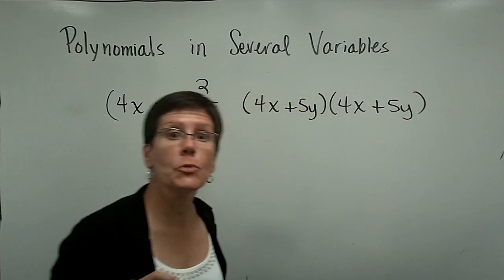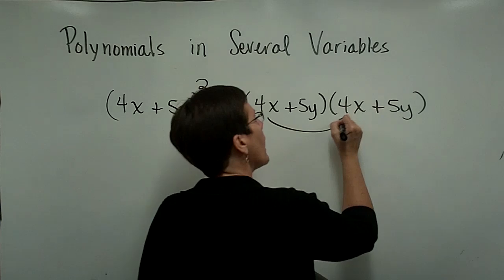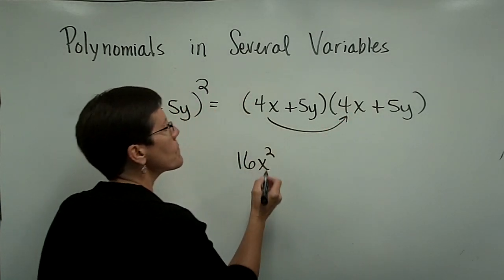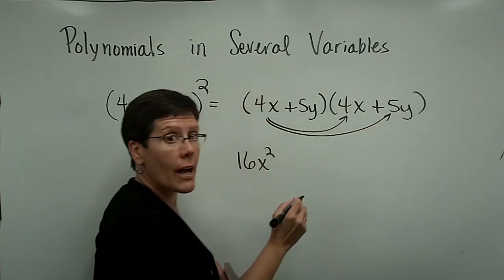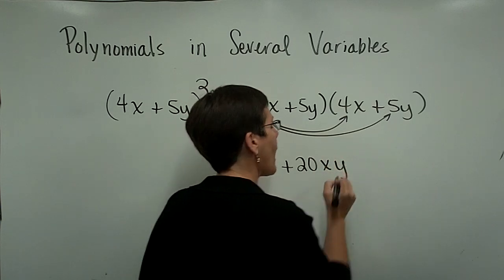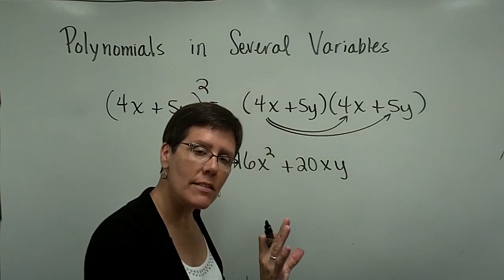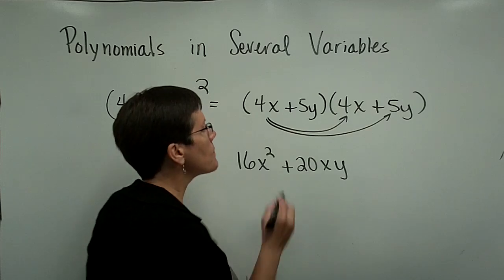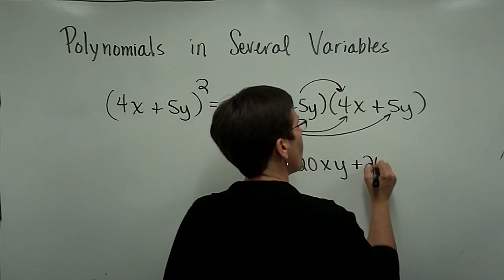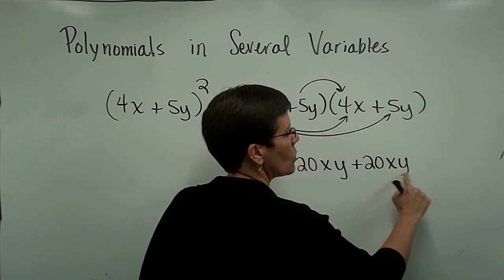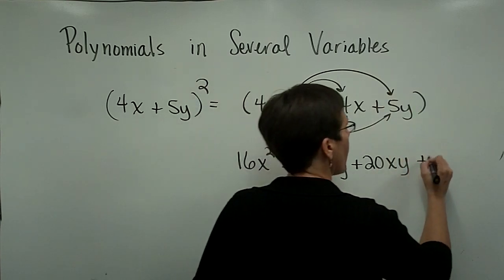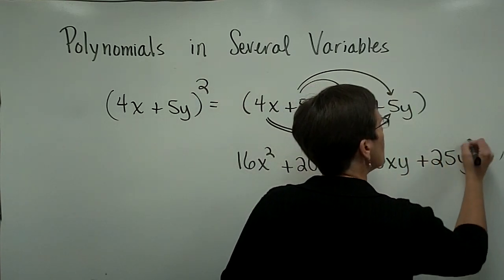So 4x times 4x is 16x². 4x times 5y is 20xy. I have to put the xy side by side. I can't add their exponents. The bases are not alike. 5y times 4x is another 20xy. We tend to put that in alphabetical order. And then positive 5y times positive 5y is positive 25y².